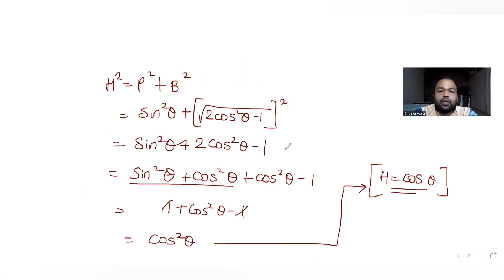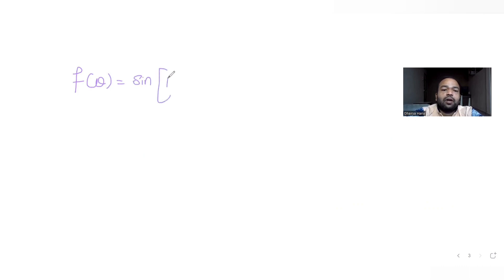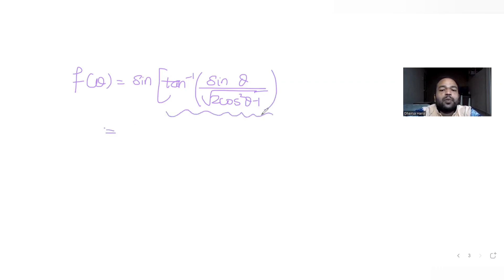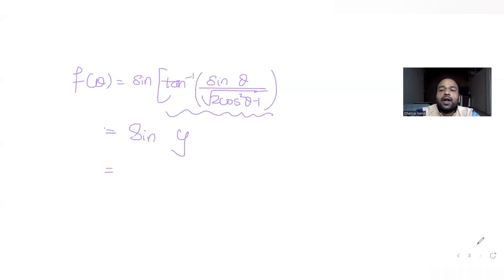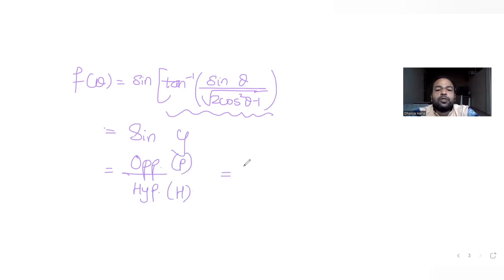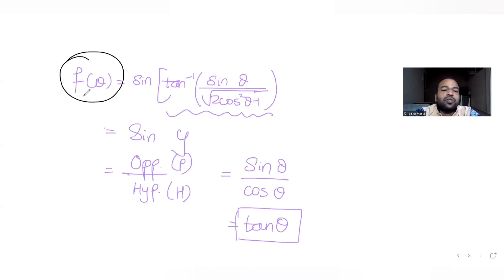Now, f(θ) was given as sine of tan inverse of sinθ by root of 2cos²θ − 1, which we substituted as y. So f(θ) = siny. Using the right angle triangle, siny = opposite/hypotenuse = perpendicular/hypotenuse. Opposite is sinθ and hypotenuse is cosθ, so siny = sinθ/cosθ = tanθ. So f(θ) = tanθ.